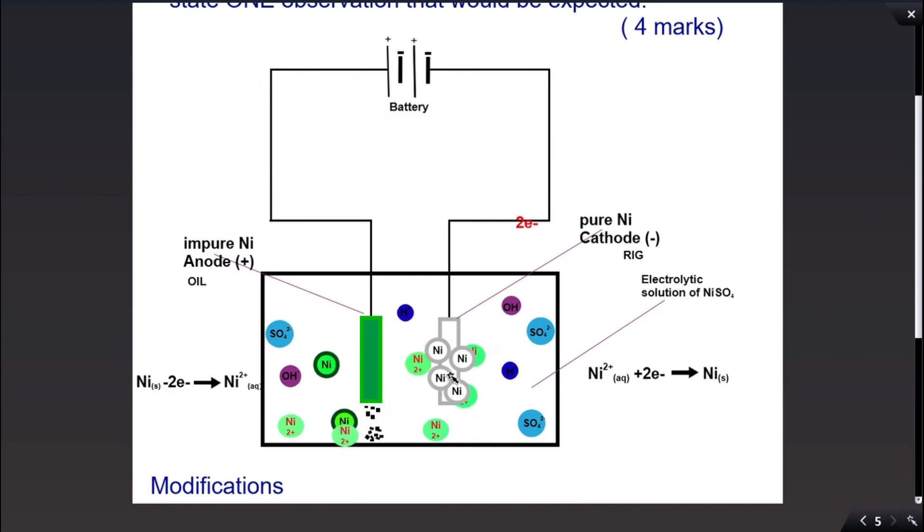Notice that these ions—the sulfate ions, the hydroxide ions, the hydroxonium ions—do not take part in this purification process because the electrodes are active, and so it requires less energy to break down the nickel solid into nickel 2+ and for the nickel 2+ ions to be reduced.